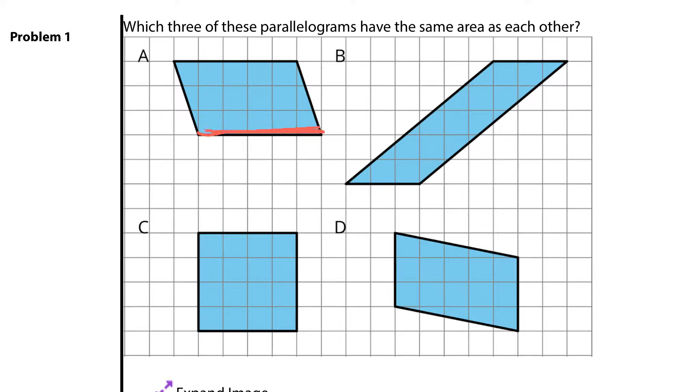So here's my base. It's 1, 2, 3, 4, 5. We need to count straight up because the base and the height meet at a right angle. And the height is 3. Area for all parallelograms is base times height. So 5 times 3 is going to get us 15 square units.